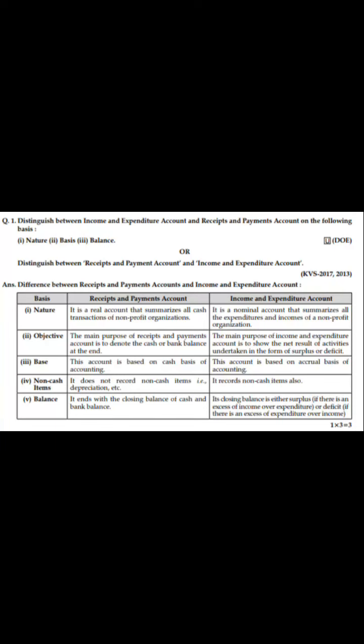The question is to distinguish between Receipt and Payment Account and Income and Expenditure Account. We will do this on the basis of nature, objective, base, non-cash items, and balance. On the basis of nature, Receipt and Payment Account is a real account that summarizes all cash transactions of nonprofit organizations, while Income and Expenditure Account is a nominal account that summarizes all expenditures and income of nonprofit organizations.